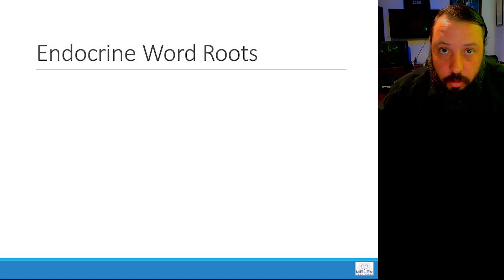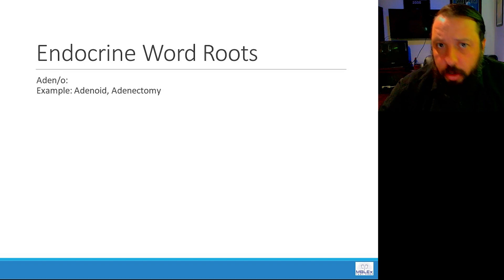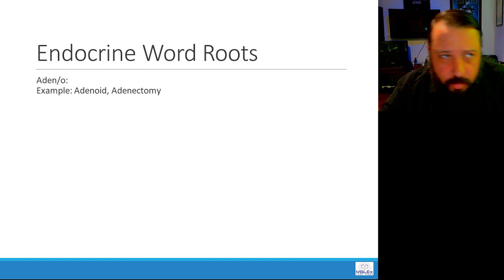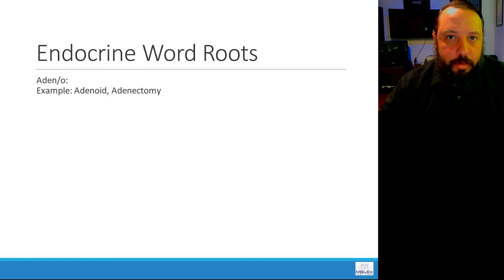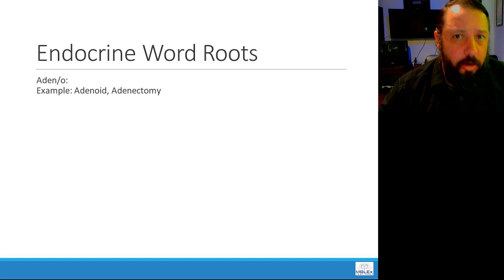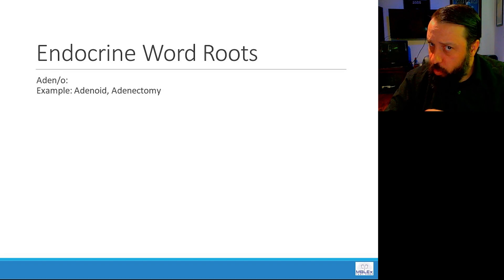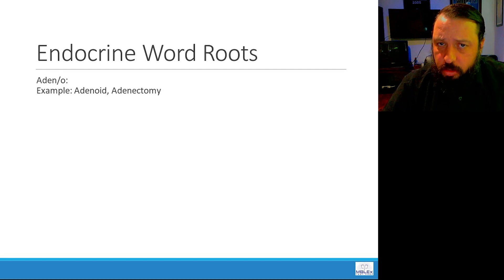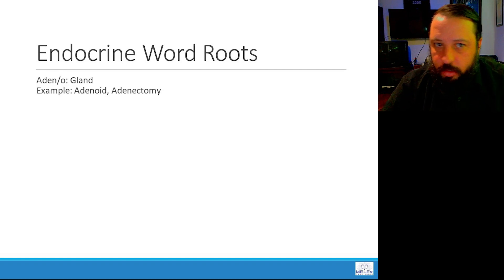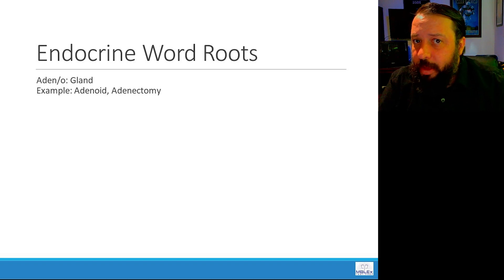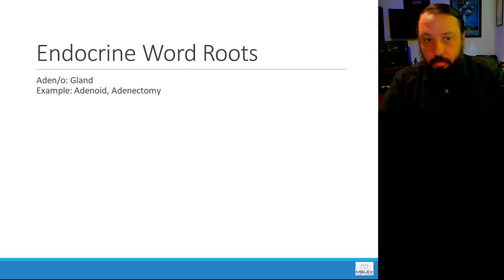Moving on to endocrine word roots. We'll start with adeno. This term kind of details what we find in the endocrine system. An adenoid is something that looks like one of these structures. An adenectomy is a surgical removal of one of these structures. Adeno means gland. So an adenoid is a small structure that looks like a gland, and an adenectomy is a surgical removal of a gland of some sort.